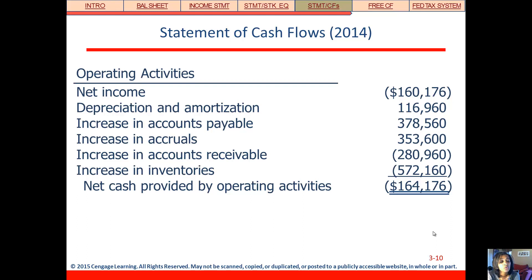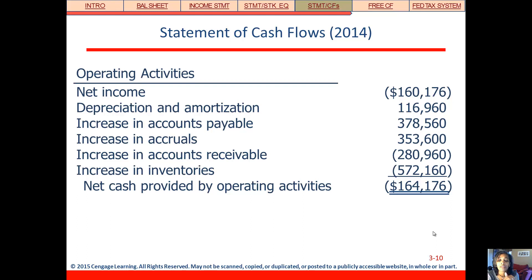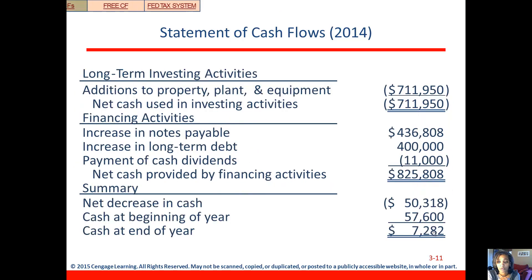An increase in accruals is similar to accounts payable — it also means they're using less cash, so that gets added. But on the asset side, if you increase accounts receivable, that means you're receiving less cash, so that's a decrease in cash from operating activities. Similarly, an increase in inventory means you have to pay for that, which costs more cash. The net cash from operating activities just sums up all of those items.